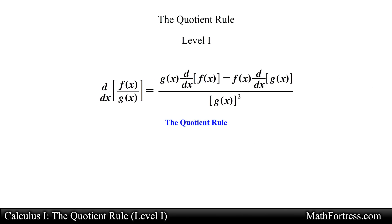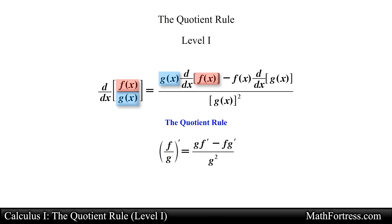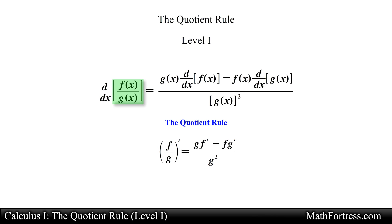Using prime notation, the quotient rule states that the derivative of a quotient is the denominator times the derivative of the numerator, minus the numerator times the derivative of the denominator, all divided by the square of the denominator. The quotient rule and the other differentiation rules learned so far enable us to compute the derivative of most rational functions.